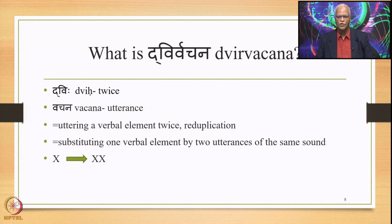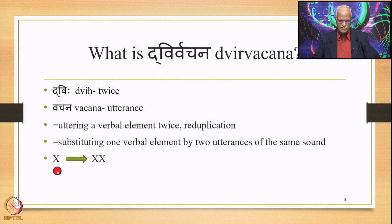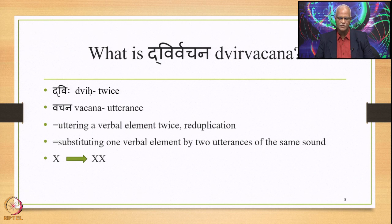In a nutshell, what it means is substituting one verbal element by two utterances of the same sound or same verbal element. So if you have X given in an environment, you utter this X twice — substitute X by two utterances of the same X. This is why this is described as Dvirvachana Sandhi where Ekasthanika Dvyadesha takes place.